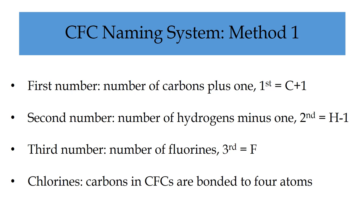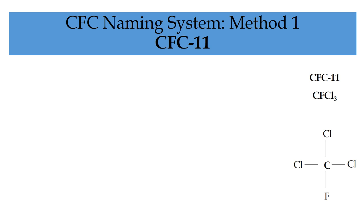For the first method, you need to assume that each CFC has a three-digit numerical code. The first number is the number of carbons plus one. The second number is the number of hydrogens minus one. And the third number is the number of fluorines. Also, for CFCs with only two numbers, you have to assume that the first number is zero. So, for example, CFC-11 becomes CFC-011.